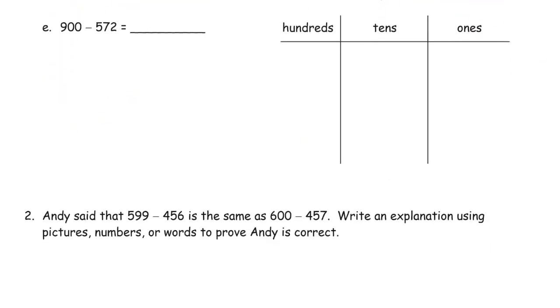900 minus 572. You can do this the arrow way too, but you really want to get good at this vertical method—you have to practice it. I'll decompose one hundred to get 10 tens, break up one of those, now 9 tens, and now we have 10 ones. And I just want to show—what I just did with the numbers, I will do with the chips before we do our subtraction: 5, 6, 7, 8, 9—so there's our 9 hundreds.